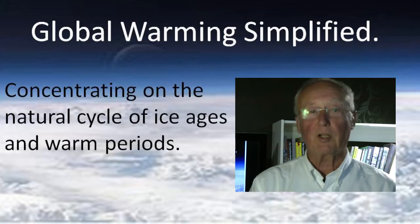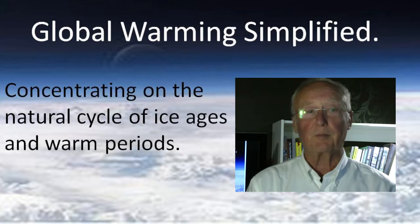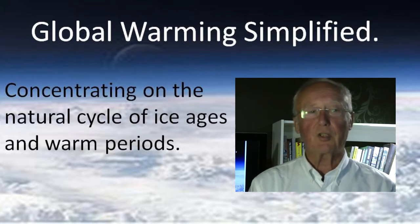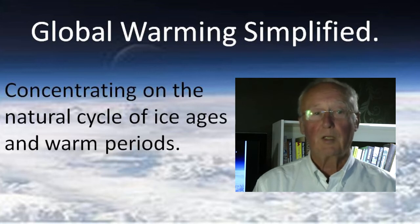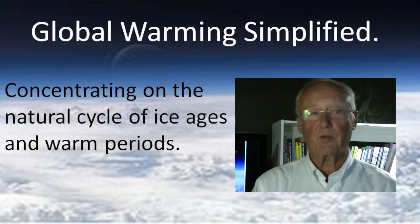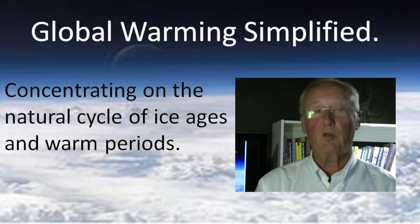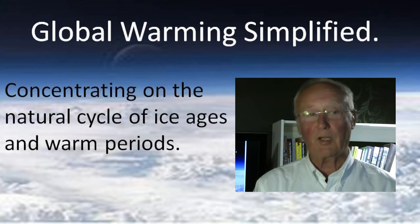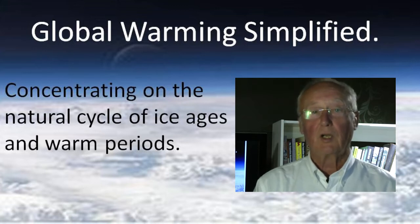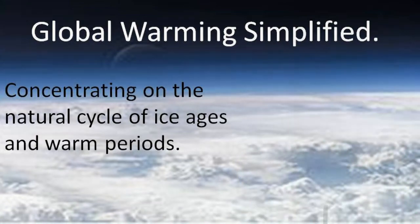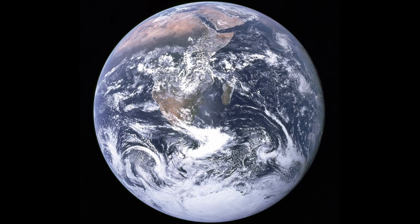Global warming is a term used to explain how the whole planet is warming due to the big pulse of CO2 we have put into the atmosphere. But in previous ages there was a natural cycle between ice ages and warm periods. This presentation sets out to explain the repeating mechanism of the natural cycle and how we have moved in and out of ice ages and warm periods over the last million years.